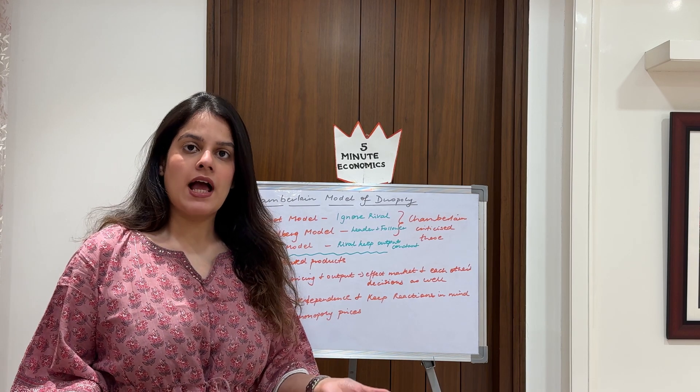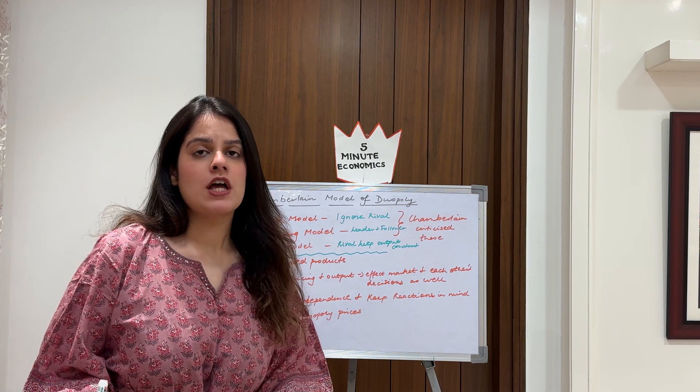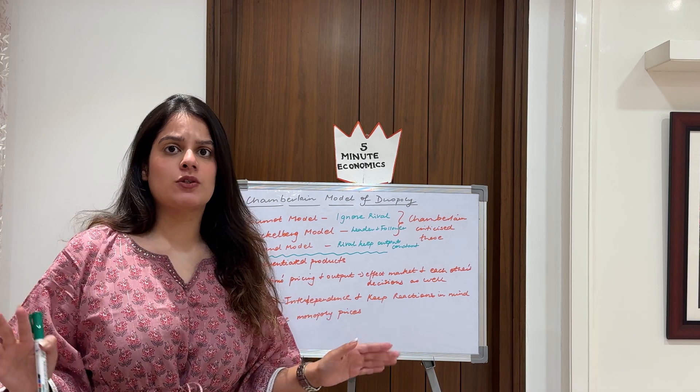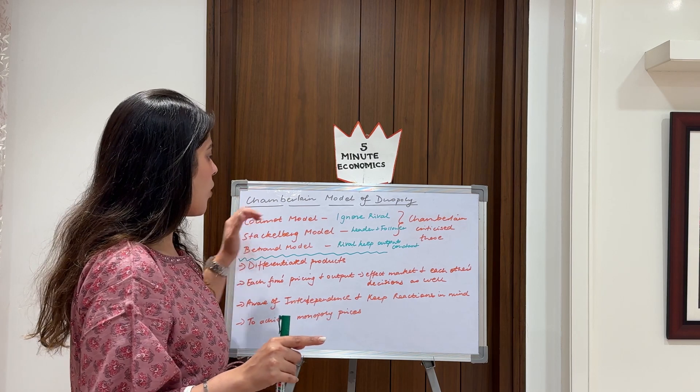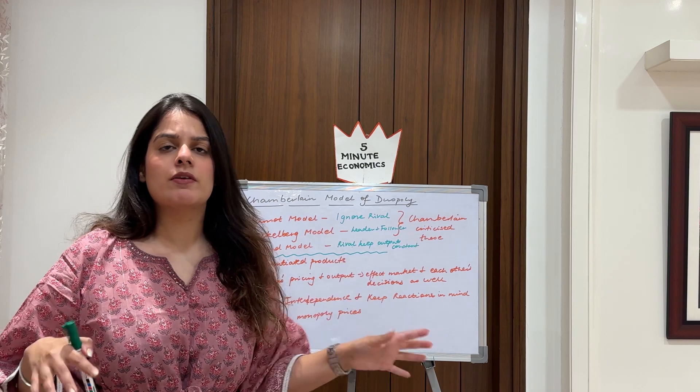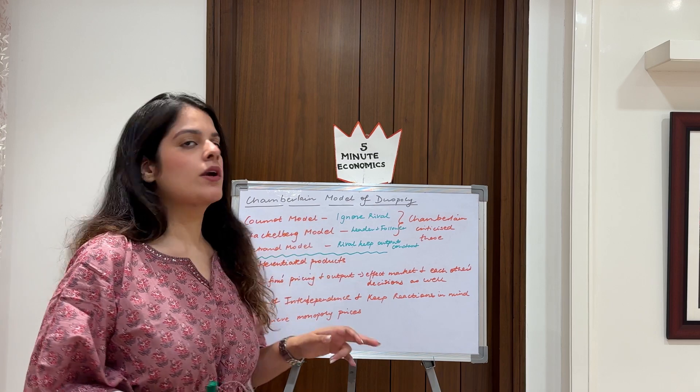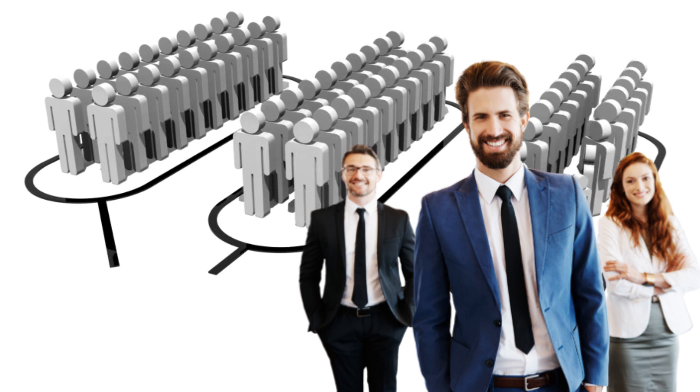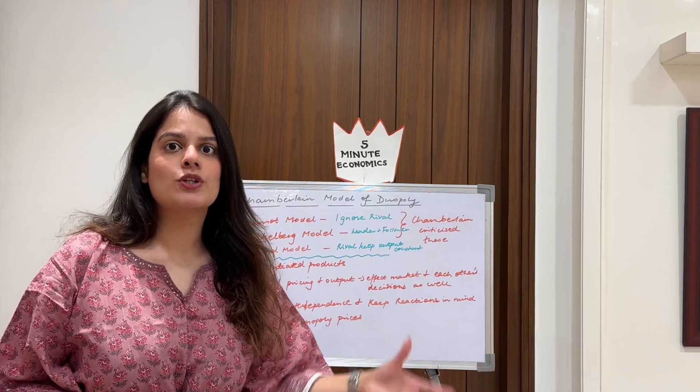Giving you a brief history of the models of duopoly which we've already covered and how they were criticized by Chamberlain who gave his own model. I'm not going in depth because I made three specific videos on these topics. I'll attach all the links in the comment section below. The Cournot model was where firms tend to ignore their rivals. Secondly, it's the Stackelberg model where there is one leader who takes the decision and then there are followers - a leader-follower model. And then there is the Bertrand model where they think that the rival is going to keep the output constant.